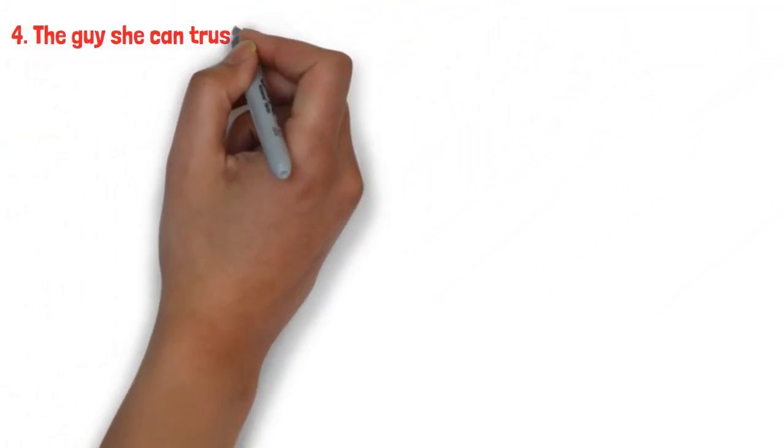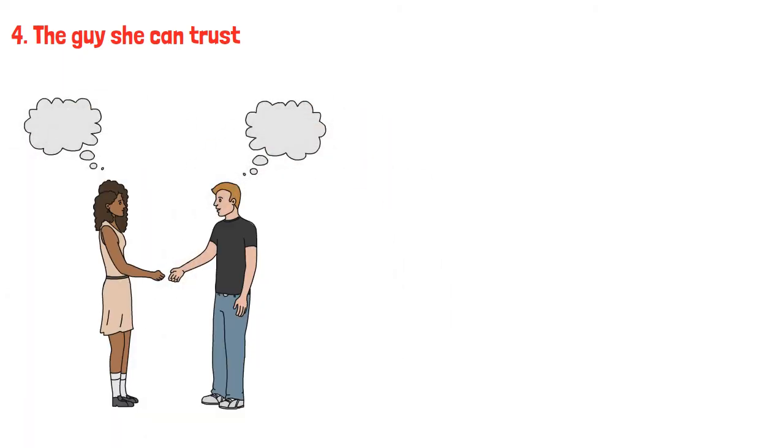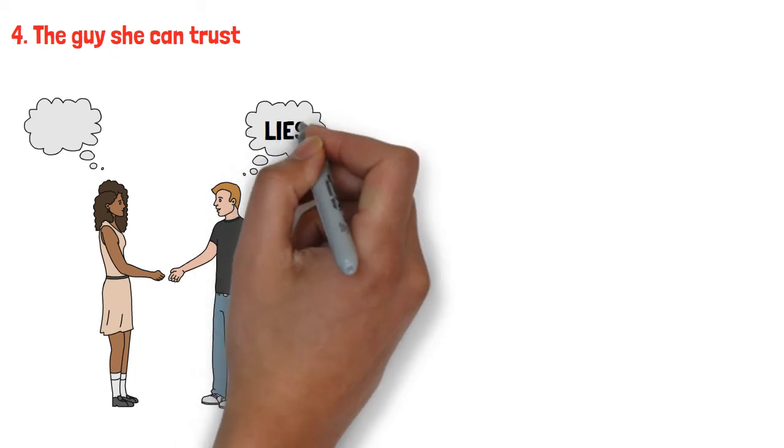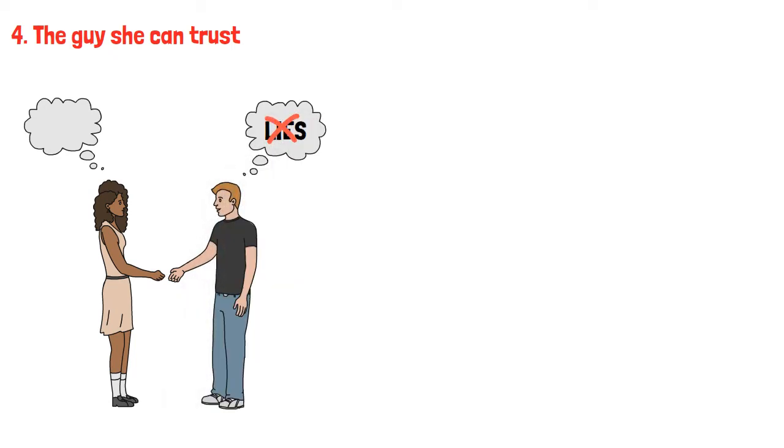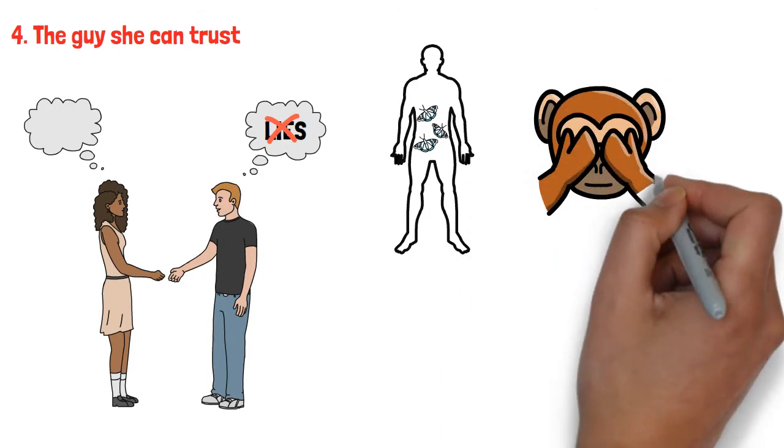4. The guy she can trust. Girls revere guys who can share their stuff with them. They don't want a guy to tell lies about his important matters. A girl is a crucial part of a dude's life, and so she has the right to know the things that are going on in his life. Girls usually look for guys who can be open about their feelings and emotional side.